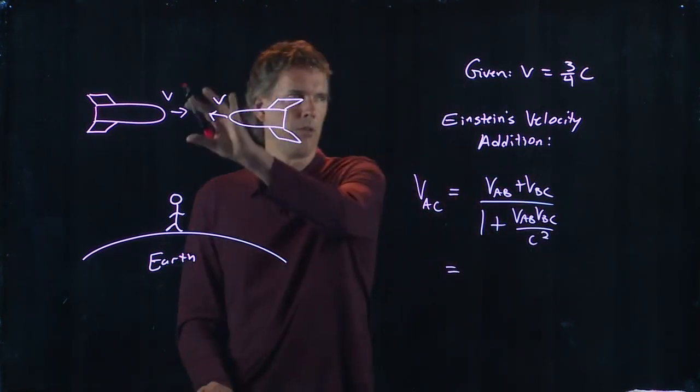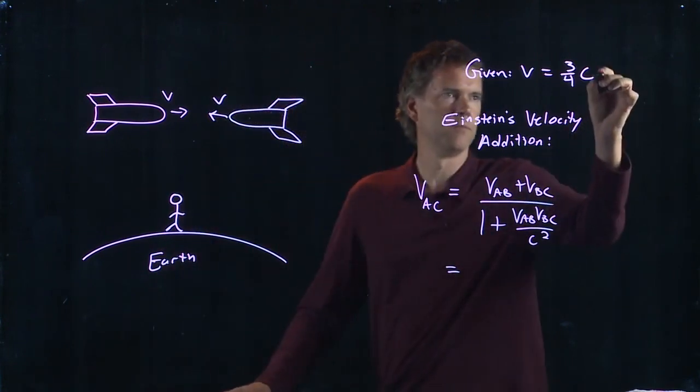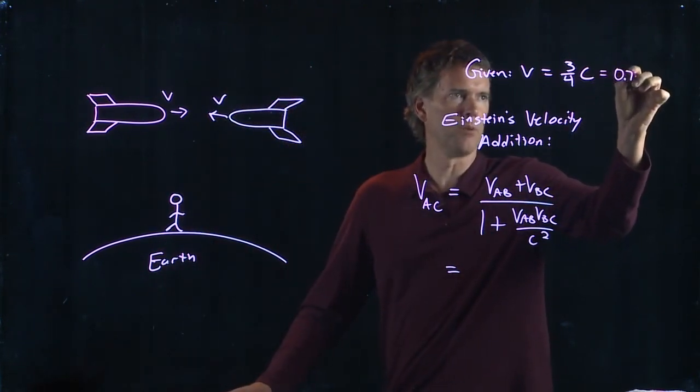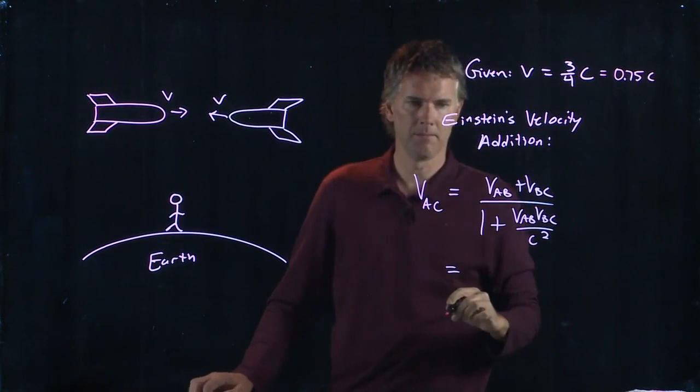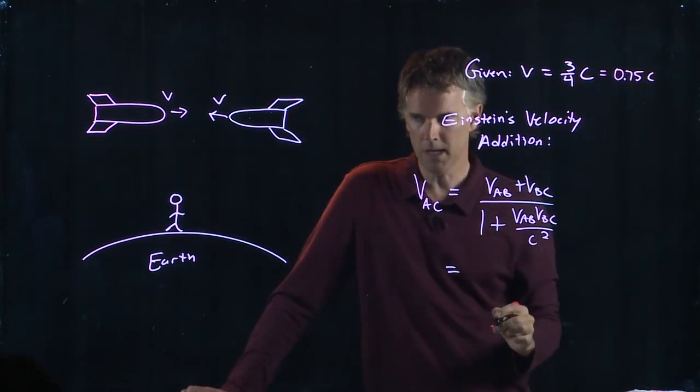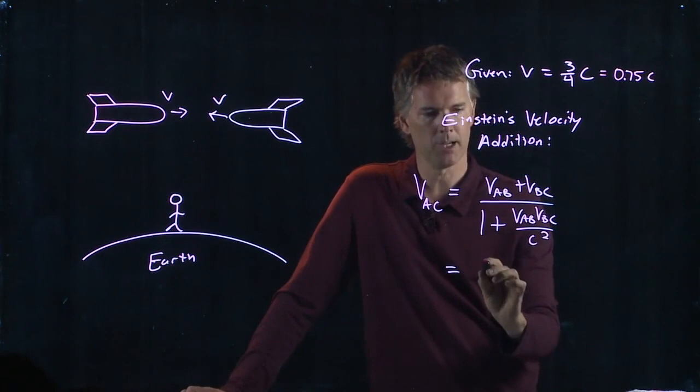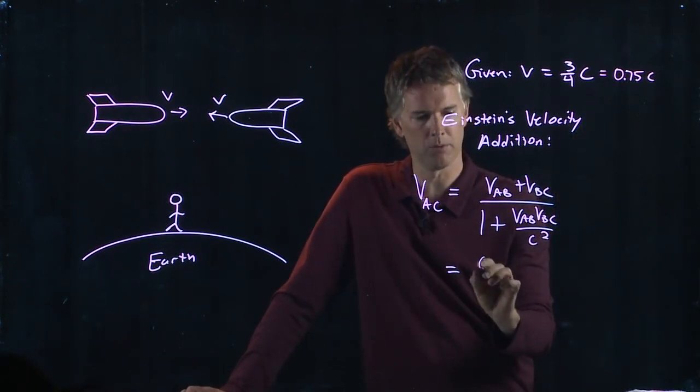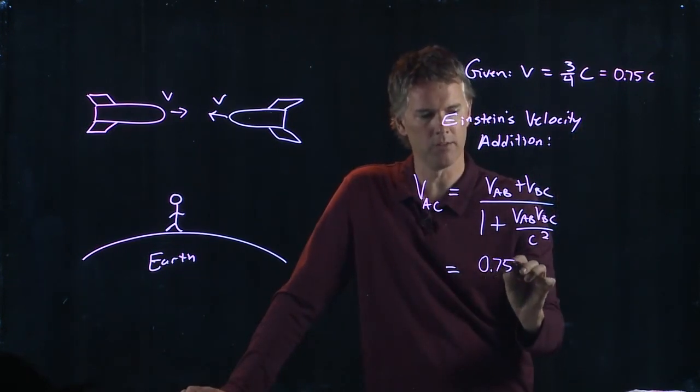If these are both three-quarter C, which is 0.75 C, what do we get for the relative speeds as observed by the people on the rocket ships? Well, we can take this 0.75 and plug it in for each of these.